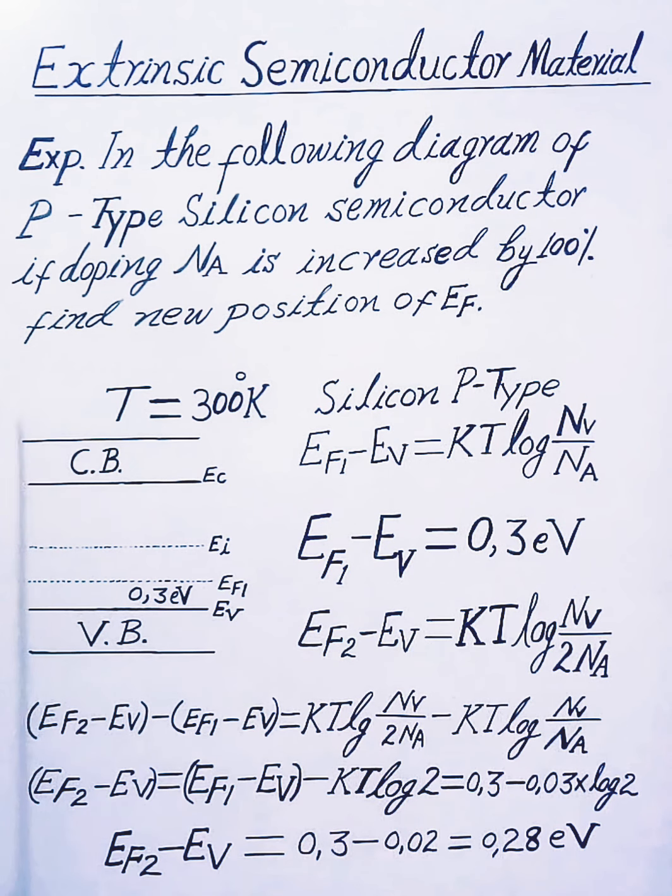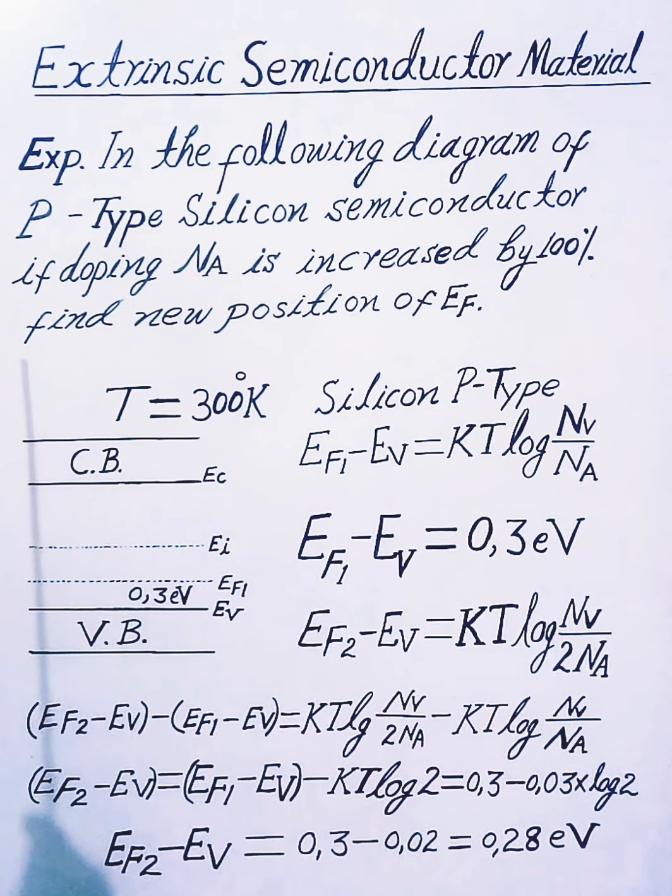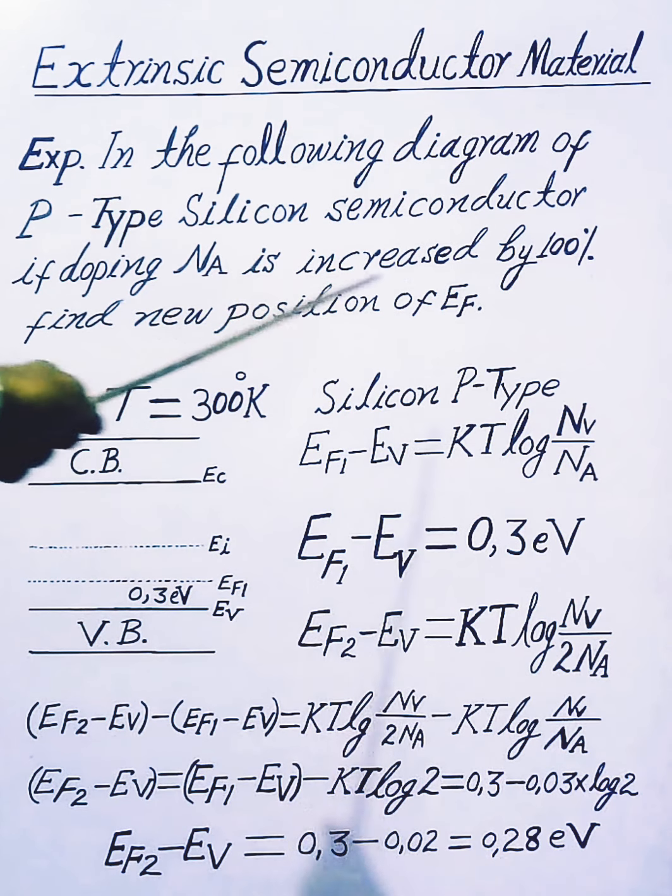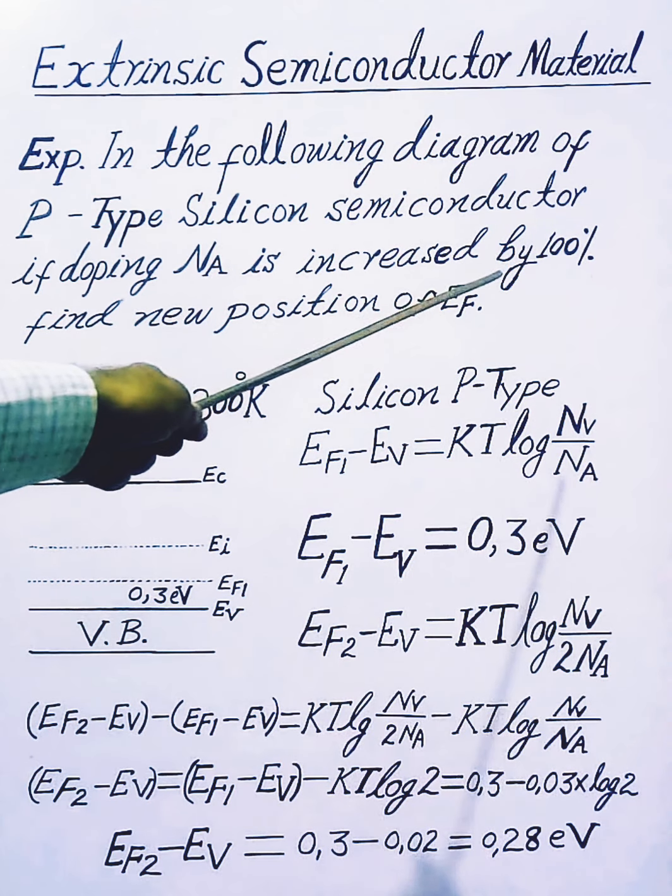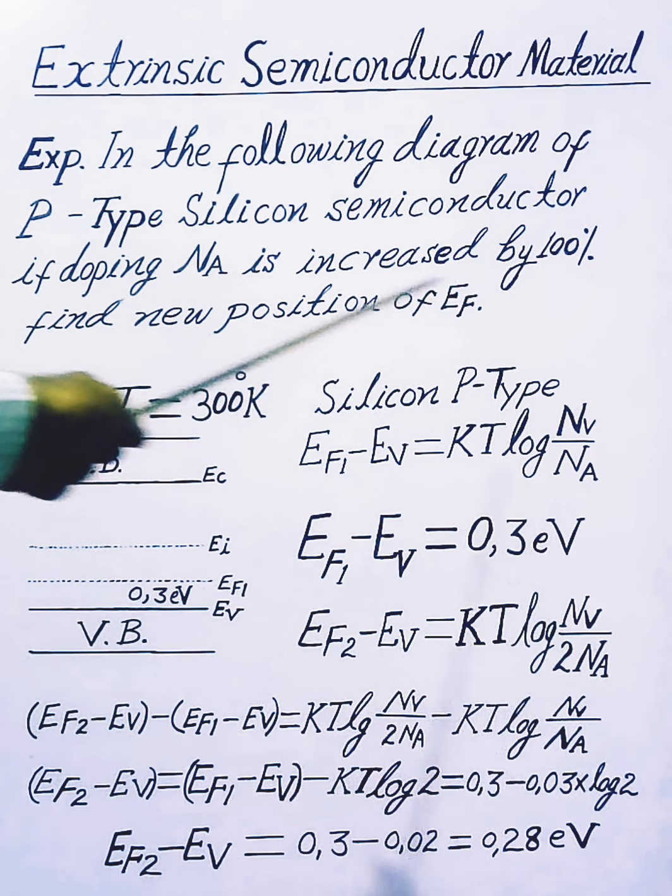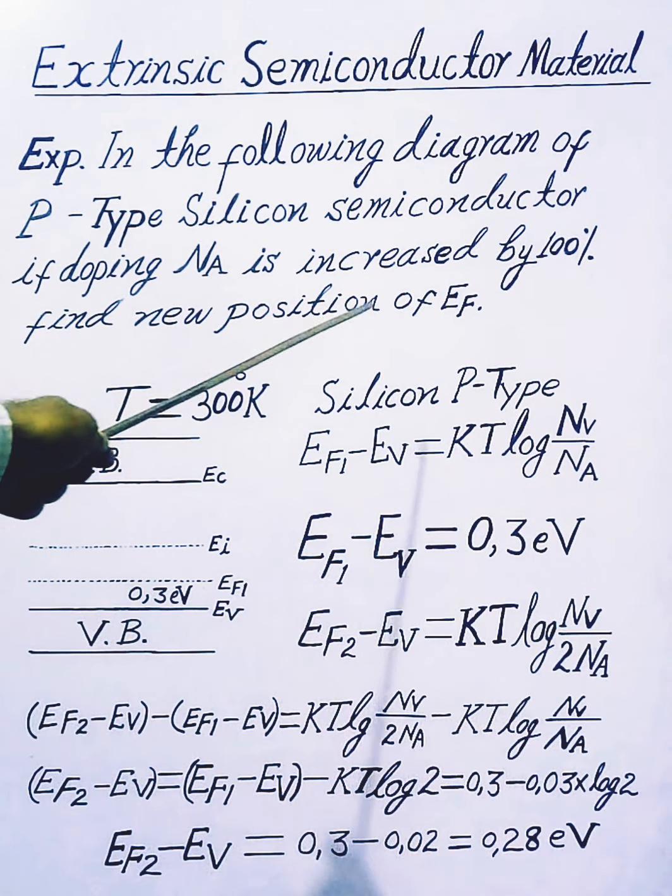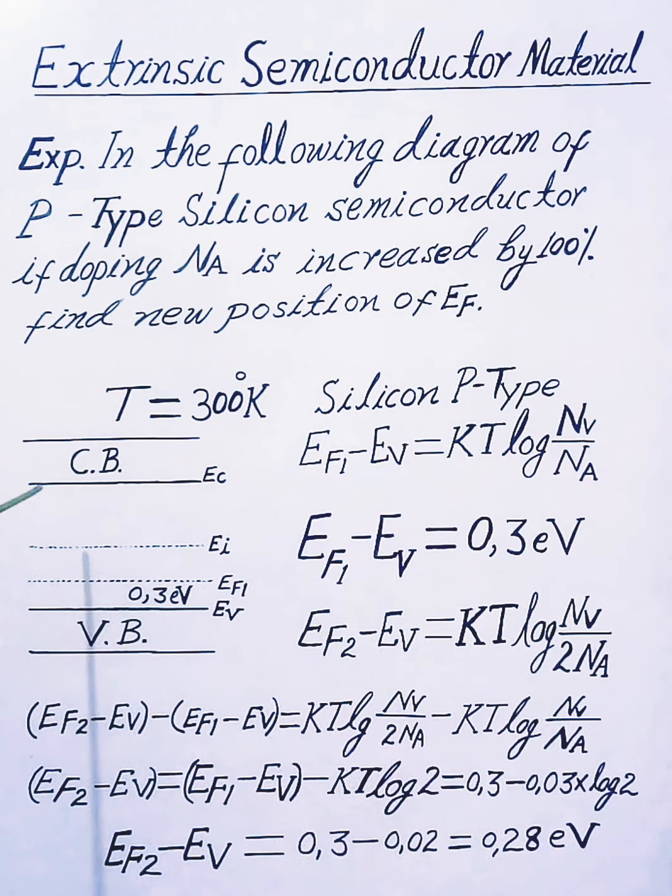Hello, in our example, in the following diagram of P-type semiconductor silicon material, if doping concentration Na is increased by 100%, meaning concentration may double from Na to 2Na, find the new position of Fermi level EF.